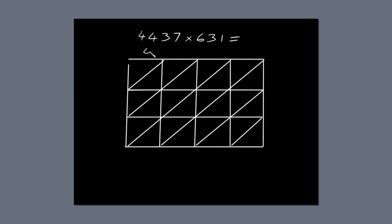Next, write the first number, 4437, along the top of the box, so each digit lines up with a column. Write 631 down the right-hand side of the box, so each digit lines up with a row.